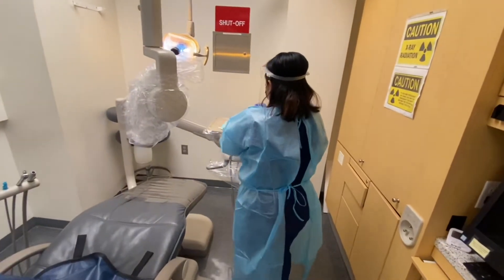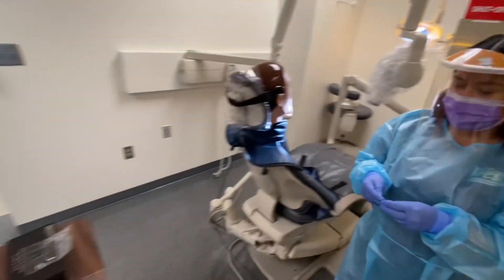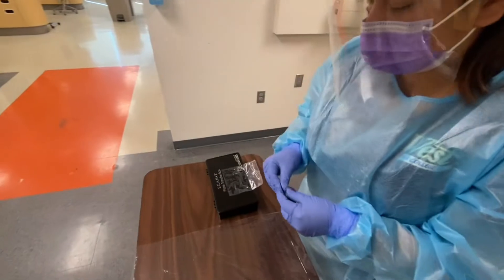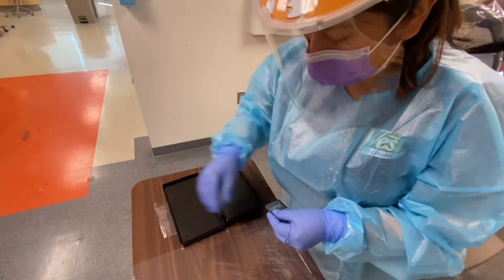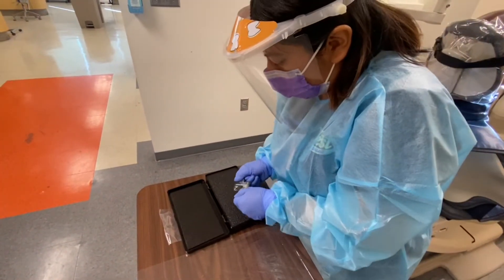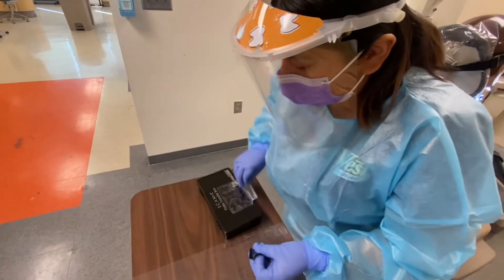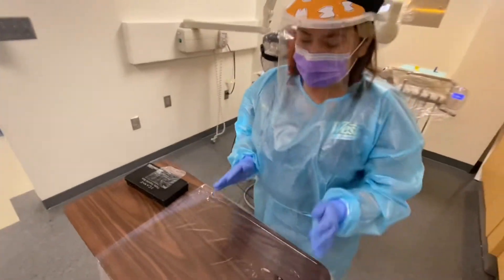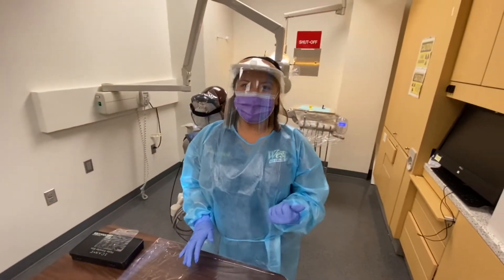Okay, now removing the film from the bite block so we could quickly transfer it into our plate transfer box so we do not get any light into the image to get an error. Just like that. And now we're ready to process the image that we just took.